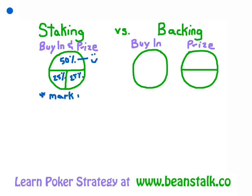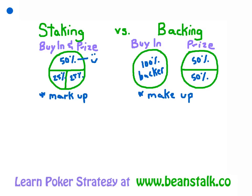The only complication in staking is something called markup, and we'll go over that in a couple minutes. But let's talk about backing now at the basic level. In backing, your buy-in and your prize no longer have a direct relationship — your buy-in is paid 100% by the backer, and in exchange for that, he expects 50% of your winnings. The horse, or the player, and the backer split any winnings 50%. Here, the complication is something called make-up. There's only one letter difference between markup and make-up, but they're actually very different.